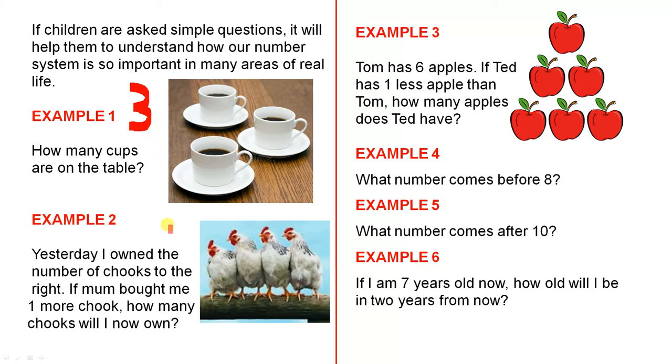Example 2: Yesterday I owned the number of chooks to the right. So if we count these chooks we have 1, 2, 3, 4. If Mum bought me one more chook, how many chooks will I own now? So if they can't do it straight away just by looking at those chooks they can just do counting. 1, 2, 3, 4, 5. So the next one will be 5.